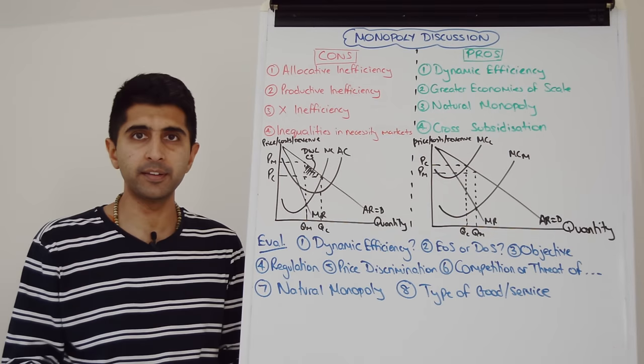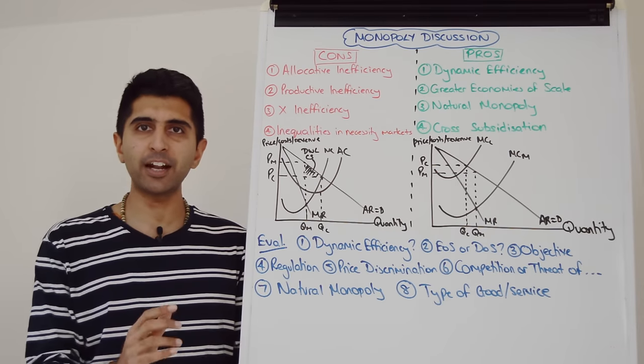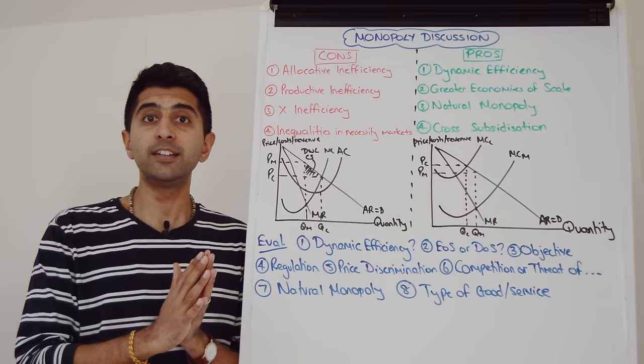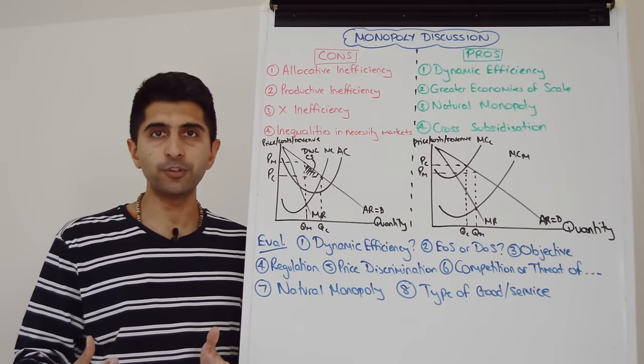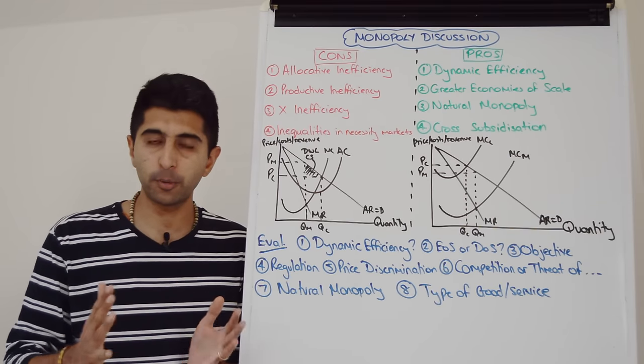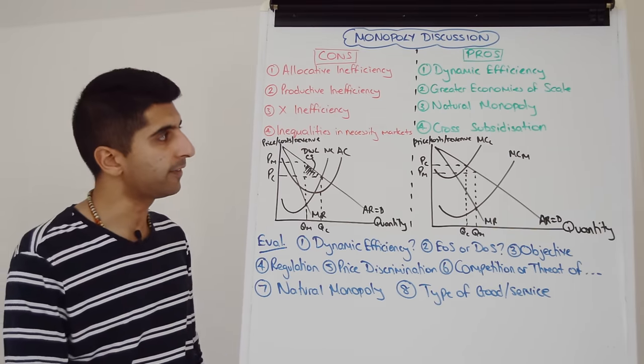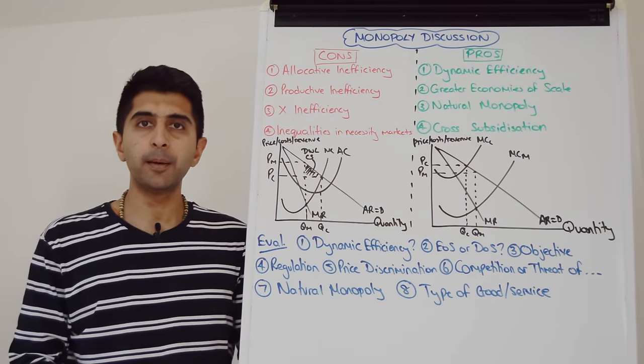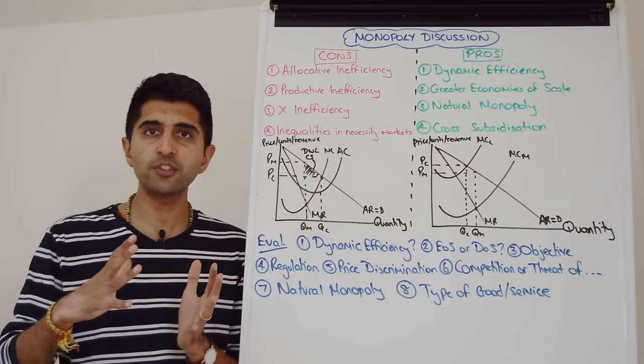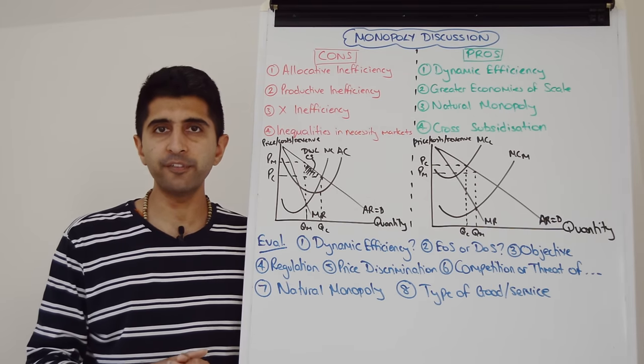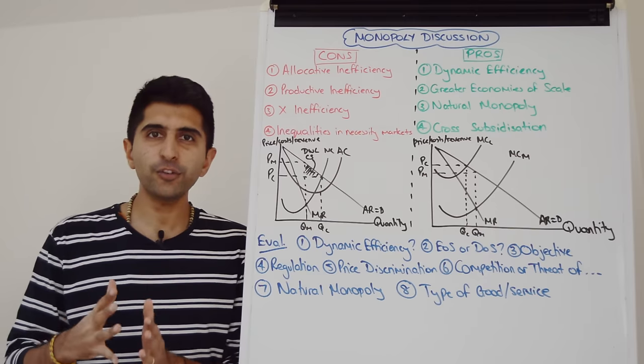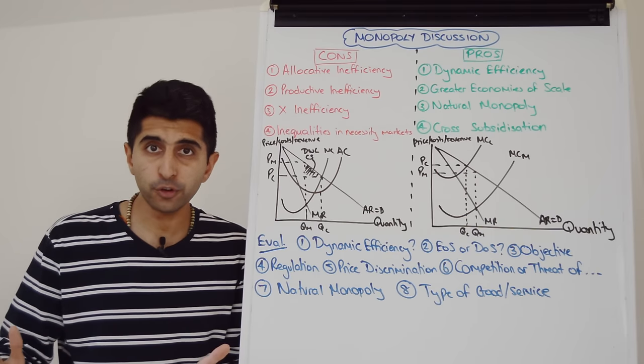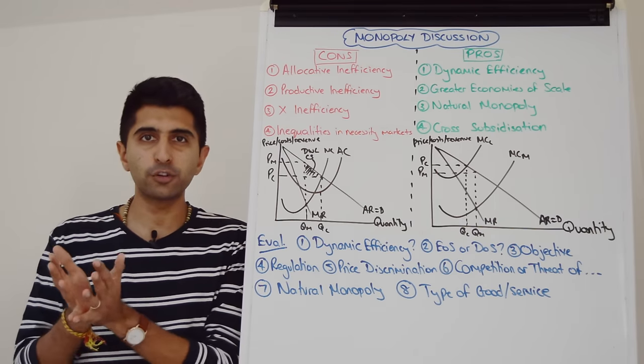We already know about natural monopolies and how a regulated natural monopoly is going to give society desirable outcomes as opposed to a natural monopoly market where there is competition which will breed inefficiency. And also bear in mind that monopolies can cross-subsidize goods and services.